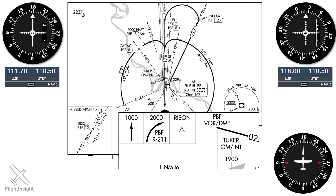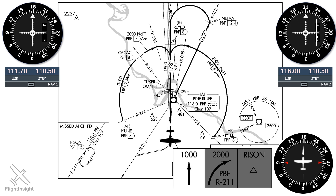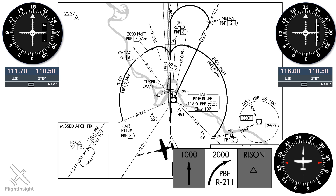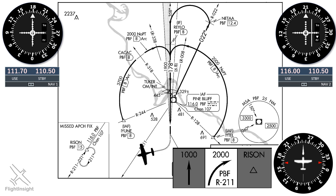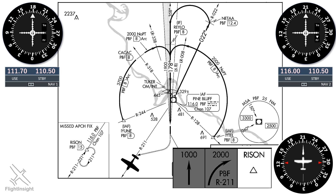Let's look at the missed approach. It's depicted graphically on the profile view and begins with a climb to 1,000 feet. We'll be intercepting the 211 radial, so we'll twist that on NAV2 — ideally we'd have done that a bit earlier than when we're actually executing the missed approach. The next step is to make a climbing right turn to 2,000 feet and intercept that radial. We'll fly about 250 to intercept. When the NAV2 needle comes in, we'll track it outbound. We're looking for the holding fix, RISON, which is along the 211 radial at 15 DME. When we have that indication, we've arrived, and we can join the hold using a parallel entry.